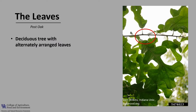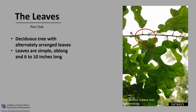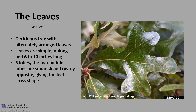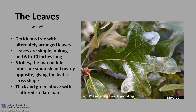Post oak is a deciduous tree with alternately arranged leaves, as you can see in the photo. The leaves are simple, which means they're made up of one blade. They're oblong in shape and about 6 to 10 inches long. The leaves typically have five lobes. The two middle lobes are squarish and nearly opposite, giving the leaf a cruciform or cross shape — a great characteristic for identifying this tree. The leaves tend to be thick and green above with scattered stellate hairs, and the underside is paler and typically pubescent or hairy.